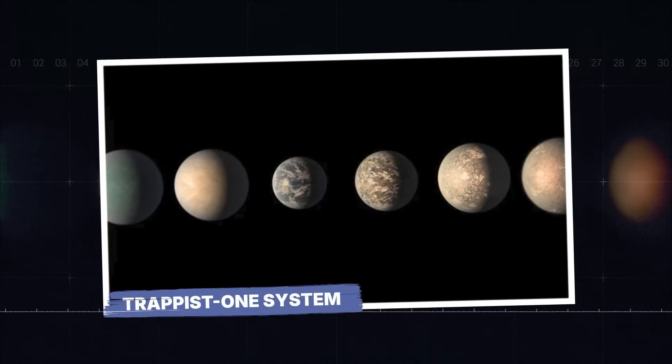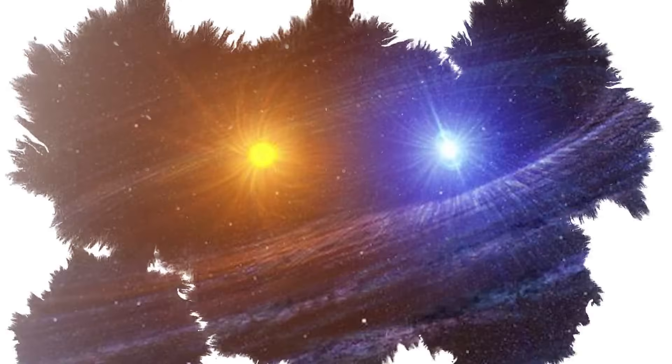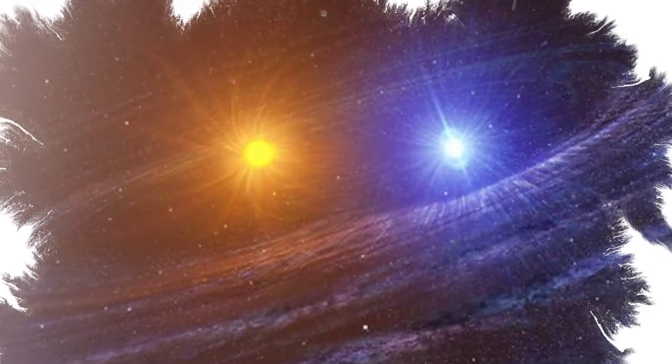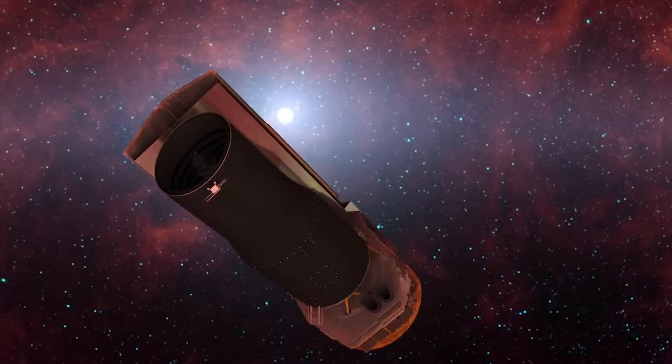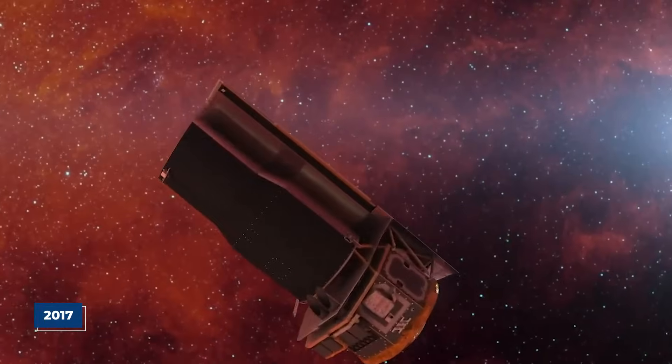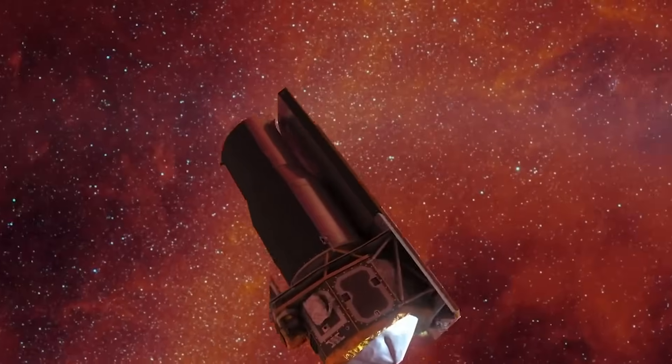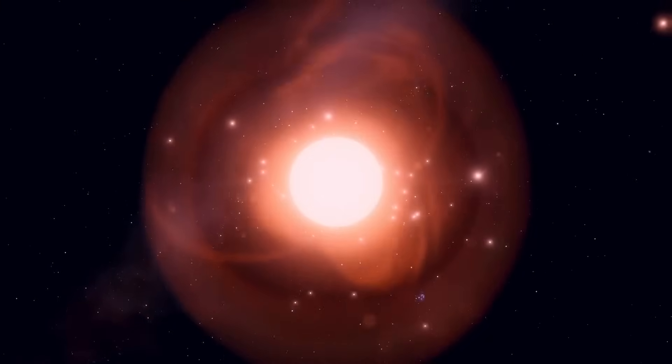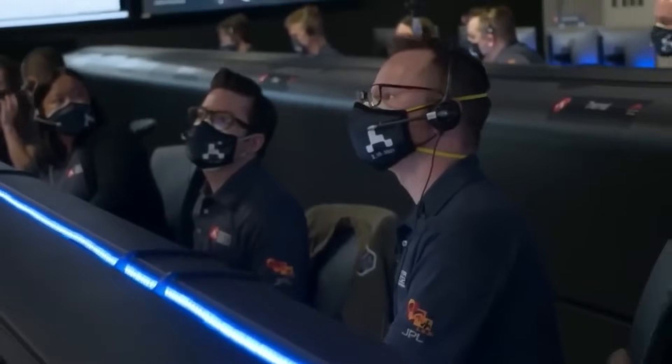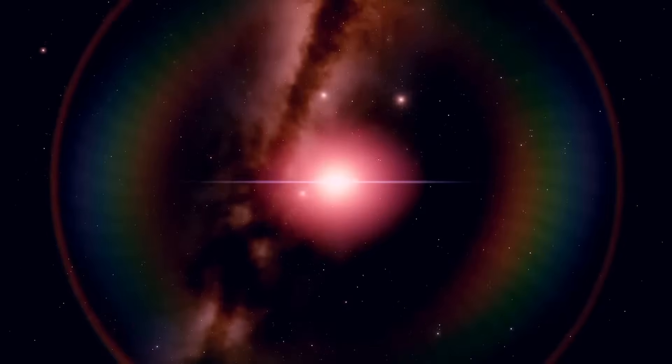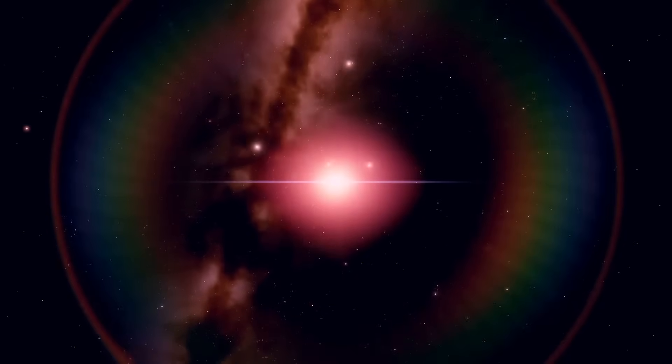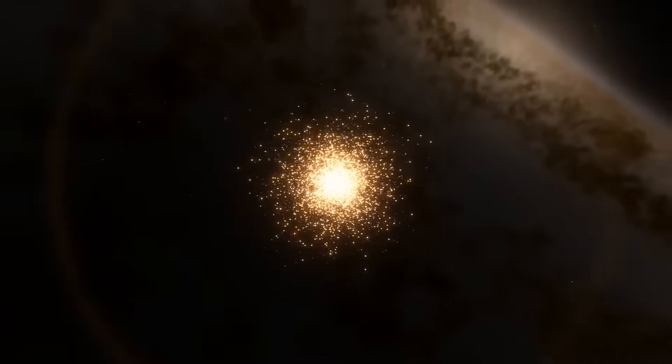TRAPPIST-1 system. As NASA hunts for Earth-like worlds, one star system stands out like a cosmic jackpot—the TRAPPIST-1 system. First revealed in 2017 by NASA's Spitzer Space Telescope, this distant star shocked scientists with a discovery that still echoes: seven Earth-sized planets orbiting a single ultra-cool dwarf star just 40 light years away.